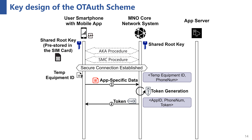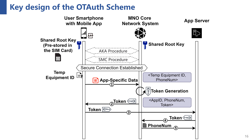The One-Type Authentication procedure begins after the secure connection is established. First, in step 1, the app on the user's smartphone sends app-specific data to the MNO server through the cellular network. Since the MNO has the capability of recognizing phone numbers, the MNO server can generate a token associated with the phone number and transfer it back to the user's smartphone in step 2. Then in step 3, the user's smartphone sends this token to the app server. The app server forwards this token to the MNO server in step 4 to get the phone number related to this token. In this way, the app server learns the phone number in step 5, and decides whether to allow the login request in step 6.